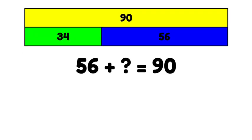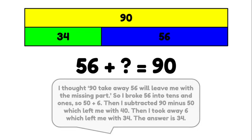Let's look at 56 plus unknown equals 90. Here's one example of a student's thinking that can show that they're actually using subtraction to solve this unknown addend equation.